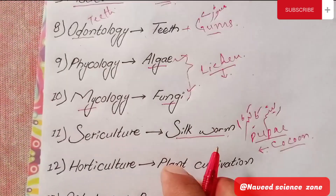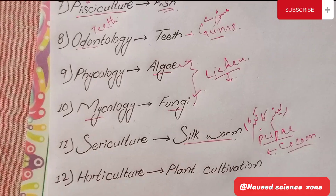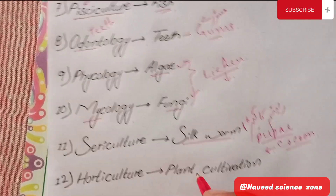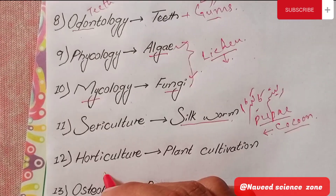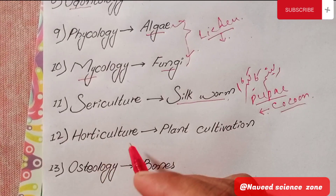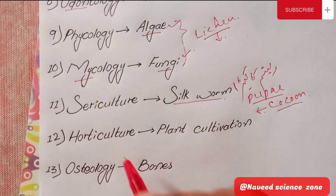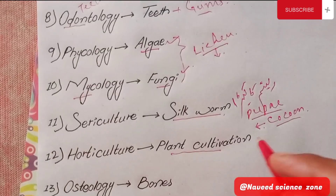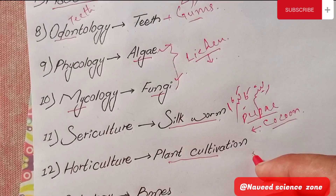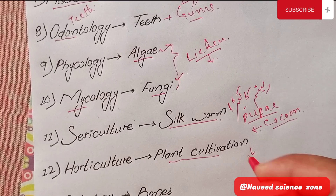The next branch is Horticulture, which refers to plant cultivation. Horticulture is also known as baghbaani and involves the cultivation and management of plants.